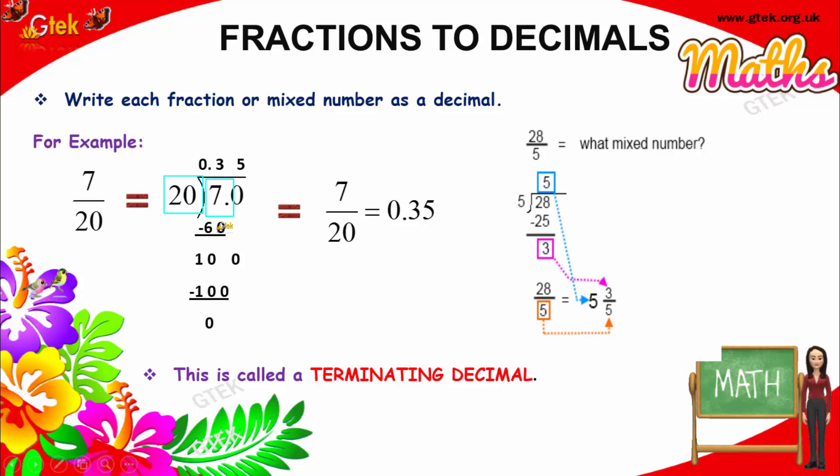3 times 20 is 60. Subtracting 70 and 60, you got 10. 10 is less than 20, so put 0. 5 times 20 is 100, so the value is 0 here. 7 divided by 20 is 0.35. That's your answer.